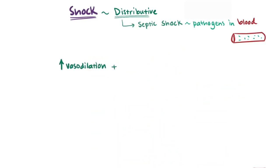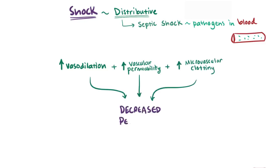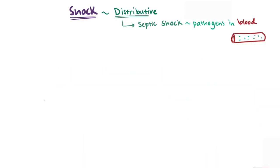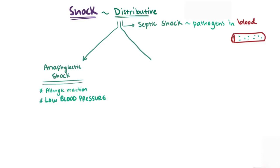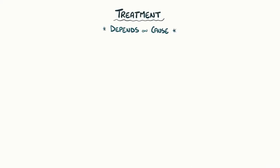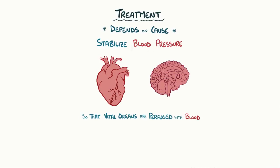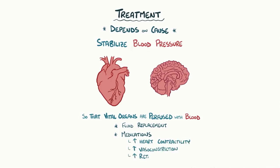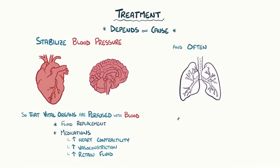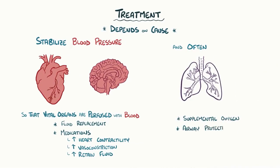The overall combined effects of widespread vasodilation, increased vascular permeability, and microvascular blood clotting all contribute to decreased perfusion of blood to vital organs. Two subtypes of distributive shock are anaphylactic shock, which is an allergic reaction that causes dangerously low blood pressure, and neurogenic shock, where the nervous system gets damaged and can't control the body's blood pressure. The treatment of shock depends on the cause. In general, the goal is to stabilize blood pressure so that vital organs like the heart and brain are perfused with blood. Fluid replacement and medications that increase heart contractility, cause vasoconstriction, and retain fluid can be administered. A person might also need supplemental oxygen or airway protection, for example with intubation.